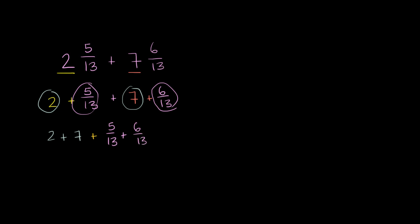So if we add the whole number parts, 2 plus 7 is 9. And the fractional parts, they already have the same denominator in this problem. 5 thirteens plus 6 thirteens, same denominator, you're going to get 11 thirteens. 5 plus 6 is 11. So you get 9 plus 11 thirteens.